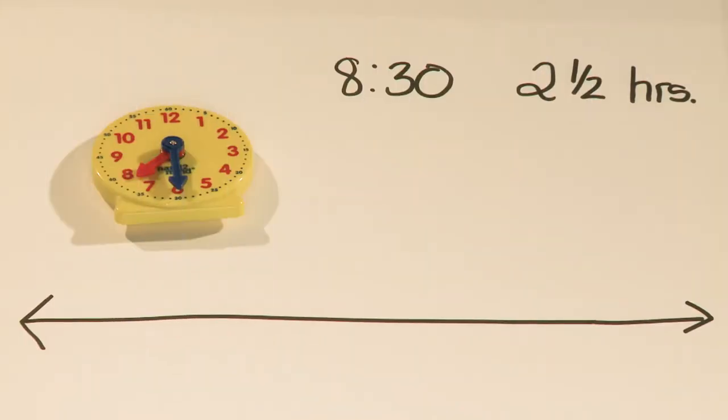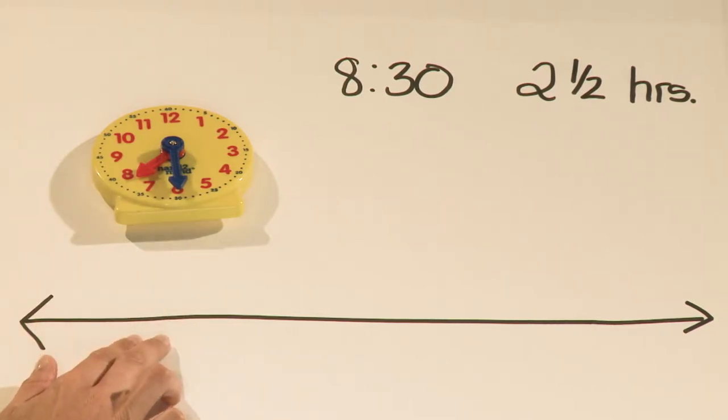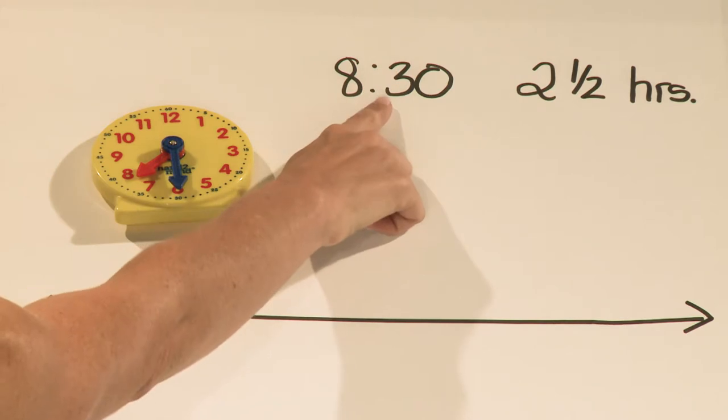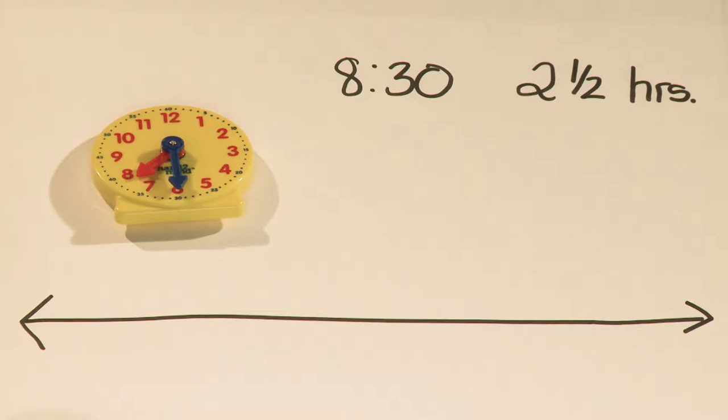Let's look at how we can use both a clock and a number line to solve a problem. Mike started reading at 8:30 PM and read for two and a half hours. At what time did Mike stop reading?